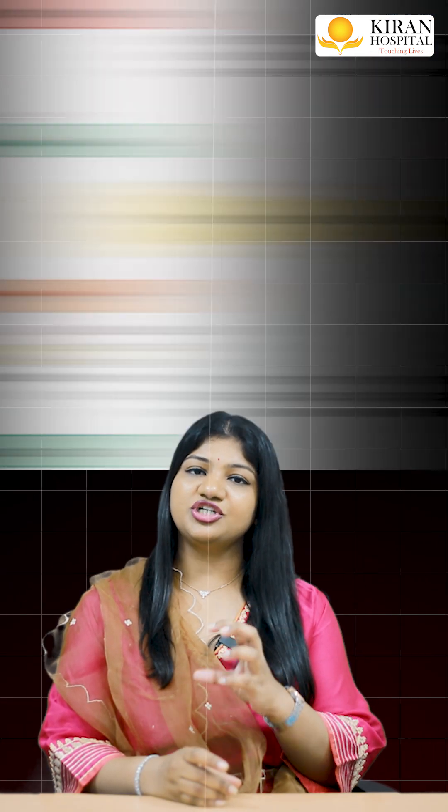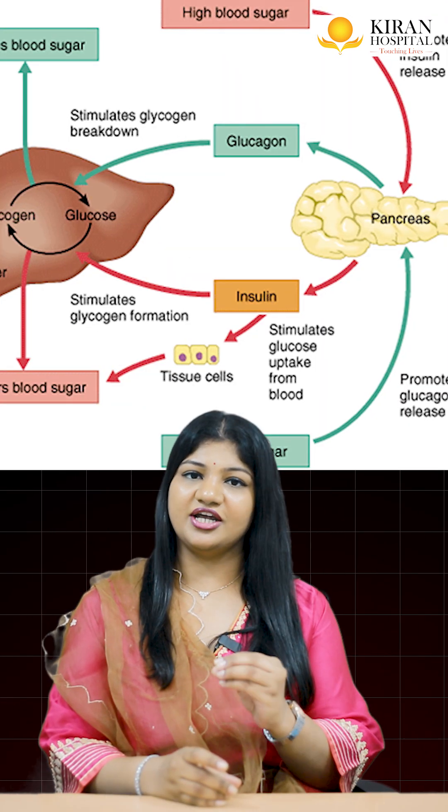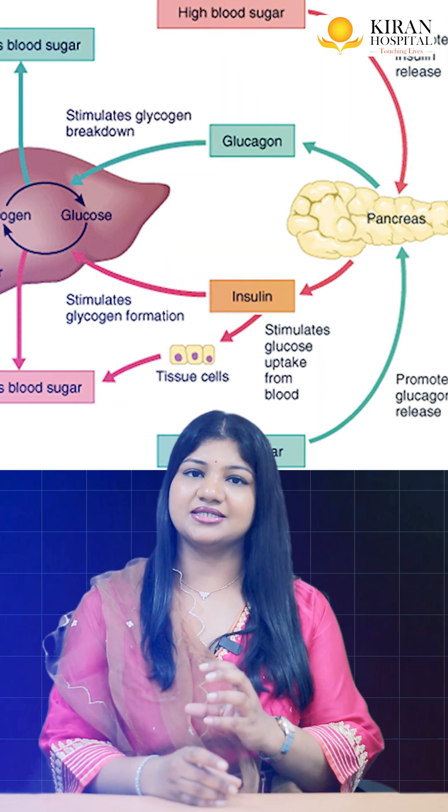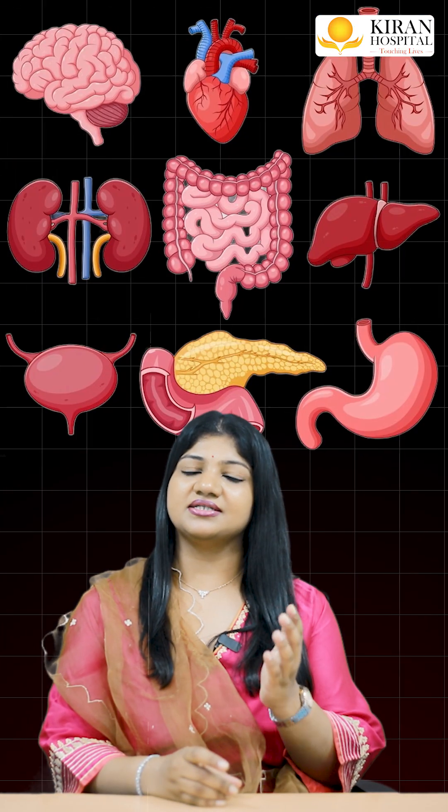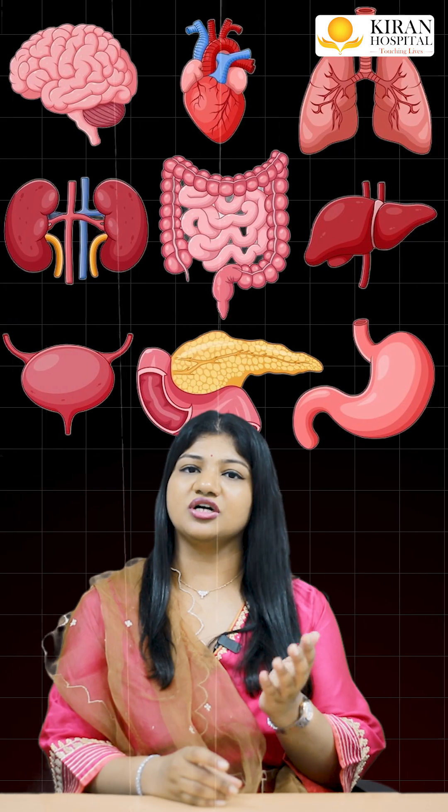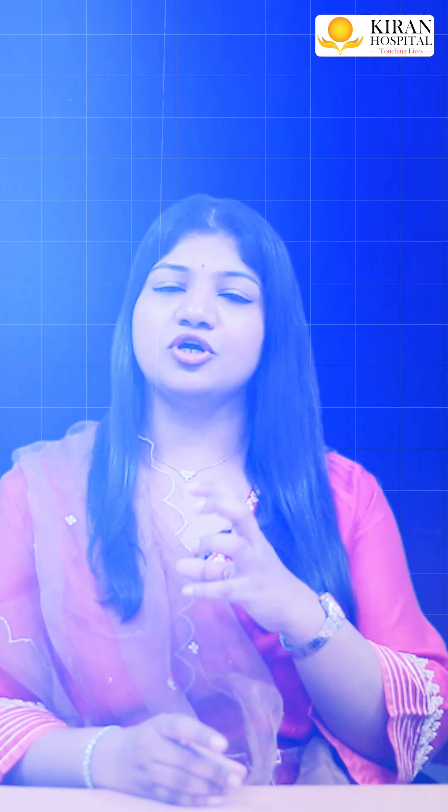These hormones act on the same receptor as insulin, because of which the insulin action decreases. Insulin is a hormone produced by the pancreas which helps in regulation of blood sugar levels. Because of these increased placental hormones, insulin cannot properly act and doesn't allow the sugar to be taken up by the organs.